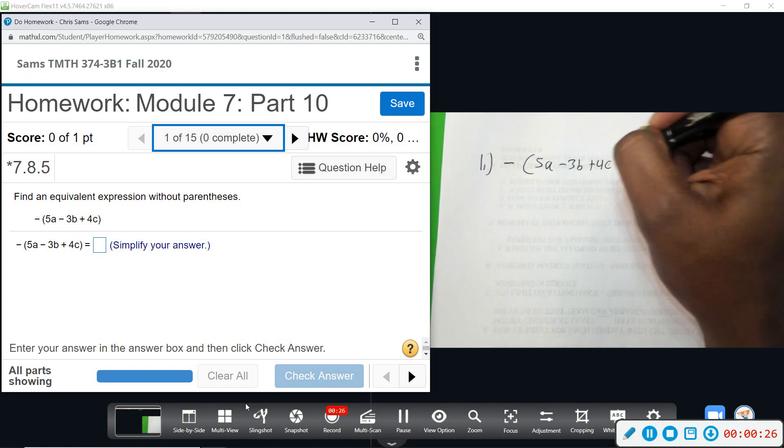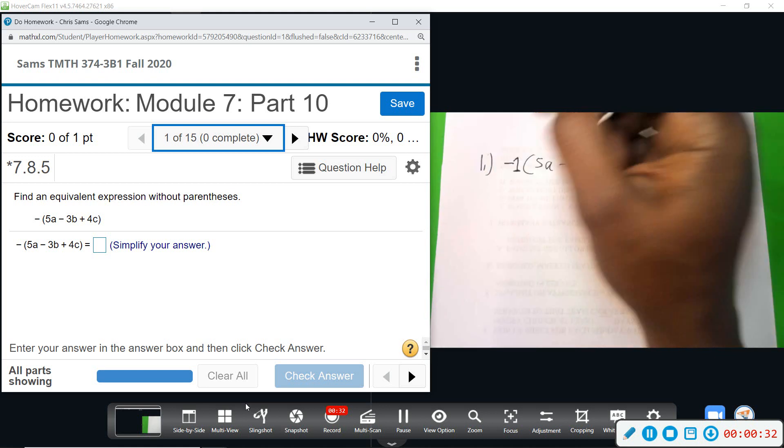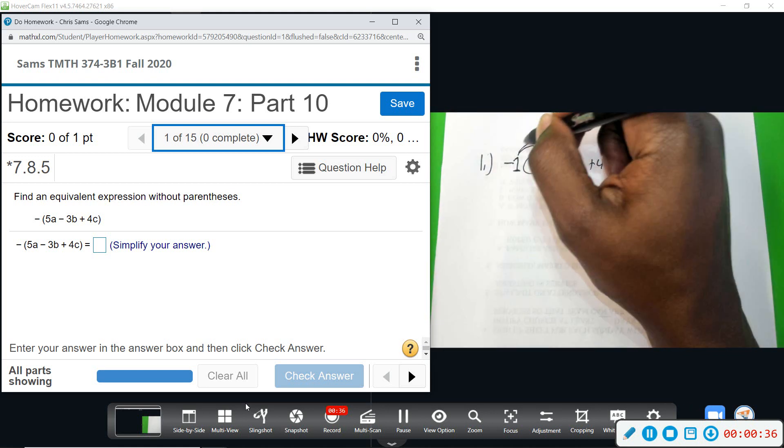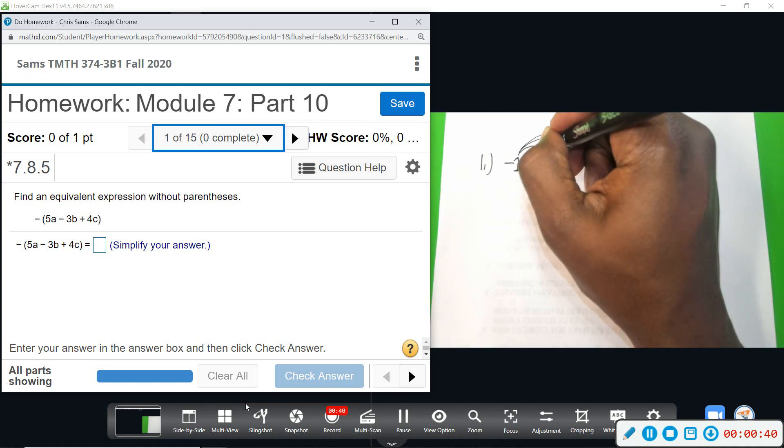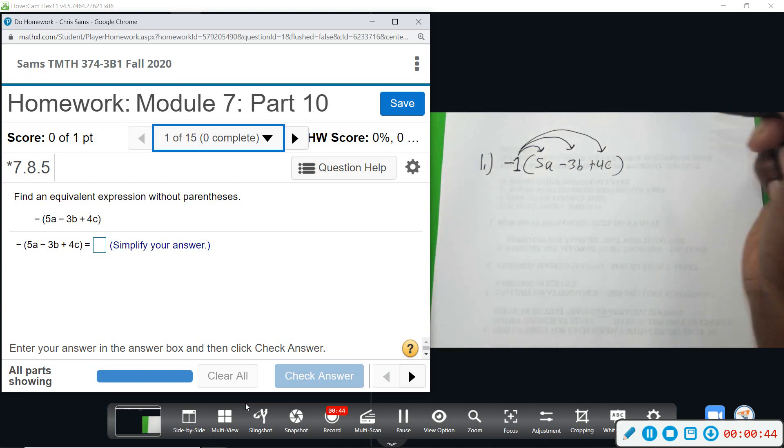This means you're going to be distributing or multiplying everything inside parentheses by negative 1. All of these terms are going to change signs when you multiply by a negative 1.